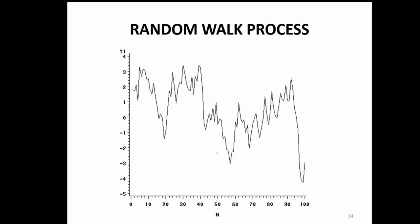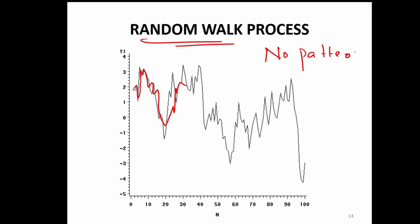So, if you plot a random walk process, it looks something like this. It looks very weird — there is no trend at all, there is no pattern. Basically, what random walk means is that there is no pattern in the data — just pure random. And there is nothing in the data that you can use for forecasting your future.